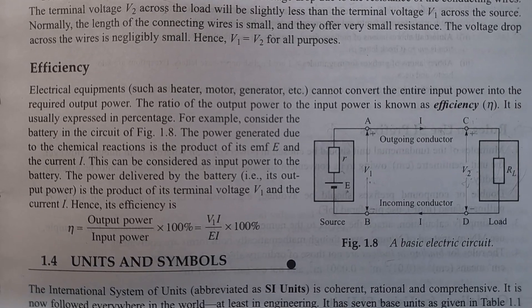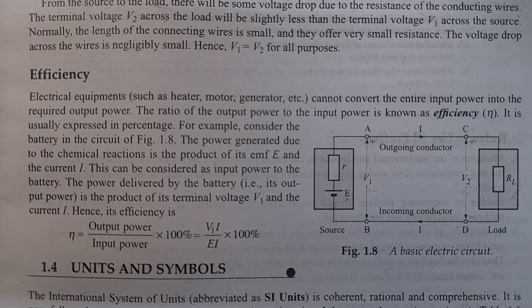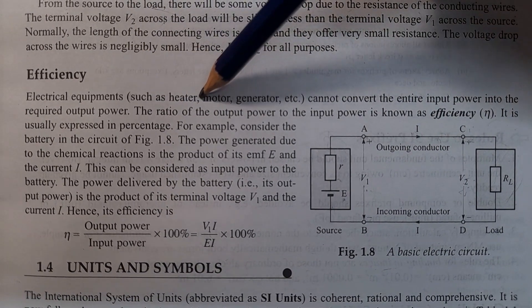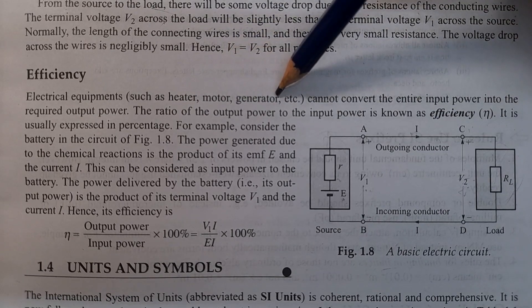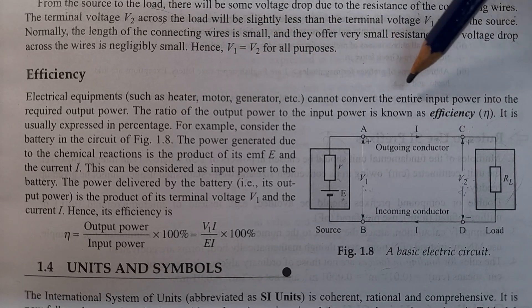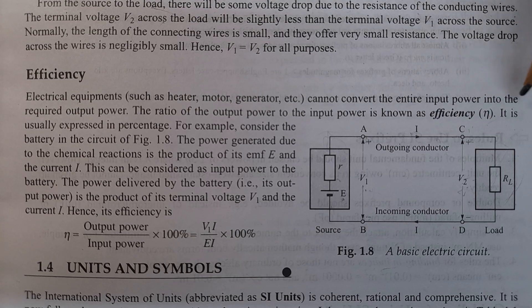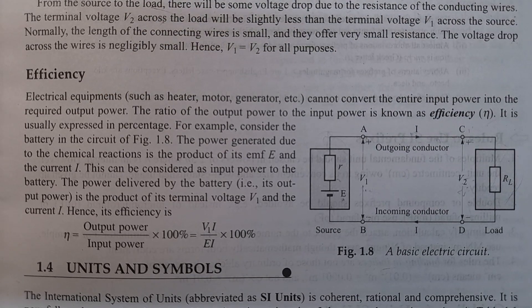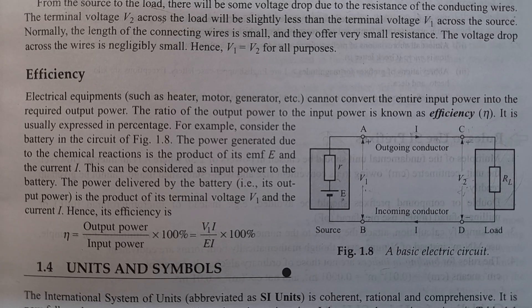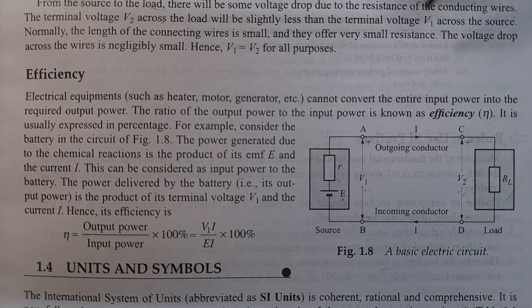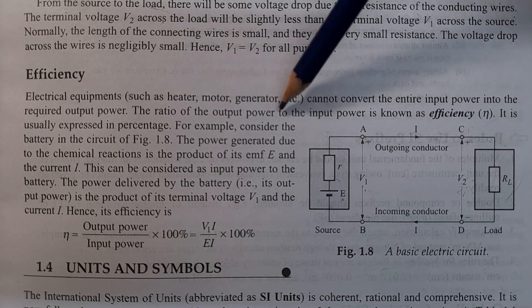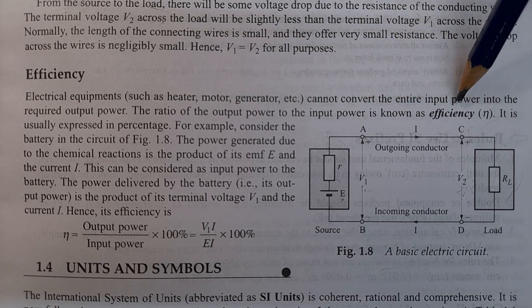Next, efficiency. Electrical equipment such as heaters, motors, generators, etc. cannot convert the entire input power into the required output power. The ratio of the output power to the input power is known as efficiency. It is usually expressed as a percentage.